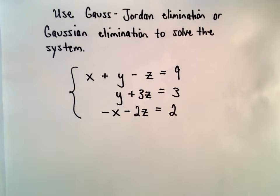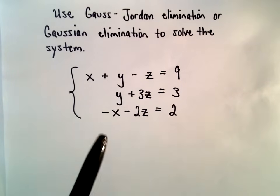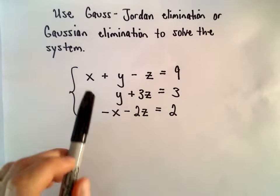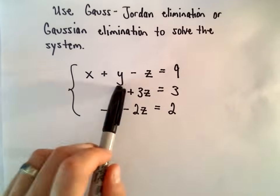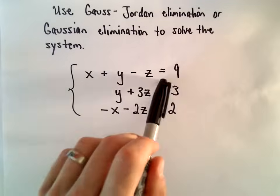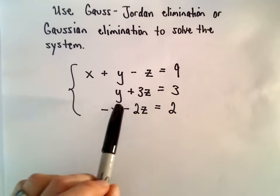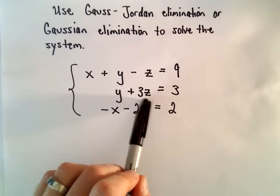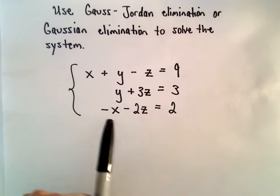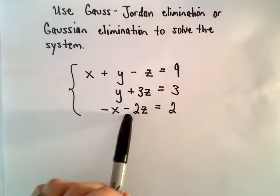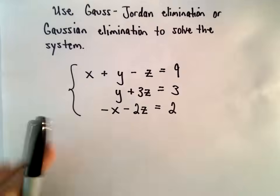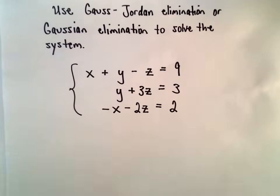Here I'm going to use Gaussian elimination to solve a system of equations. We've got x plus y minus z equals 9, y plus 3z equals 3, and negative x minus 2z equals 2.